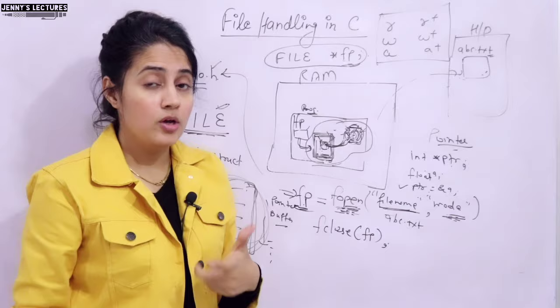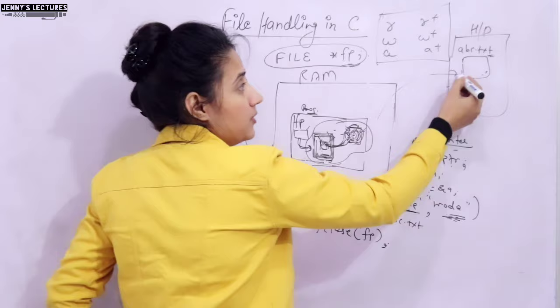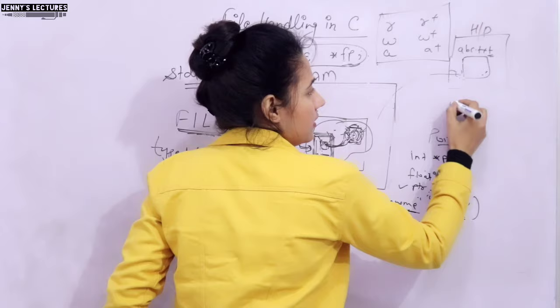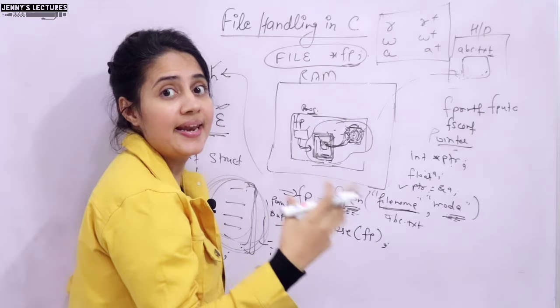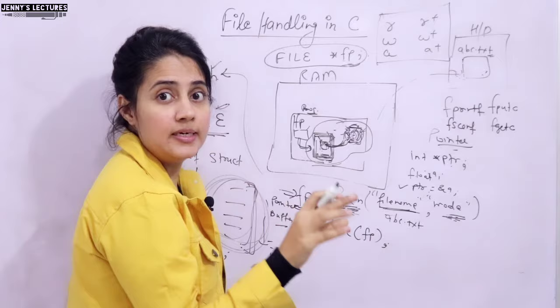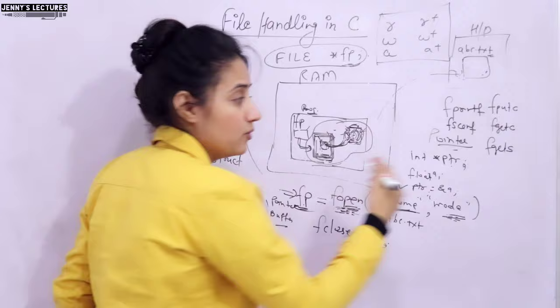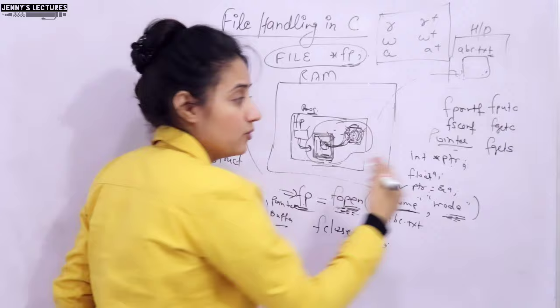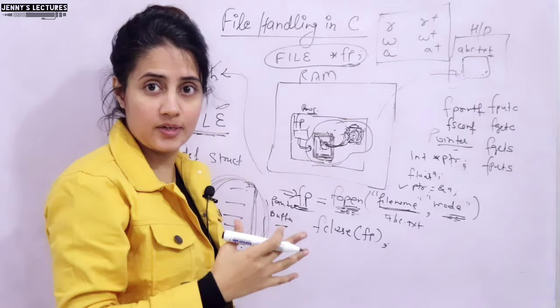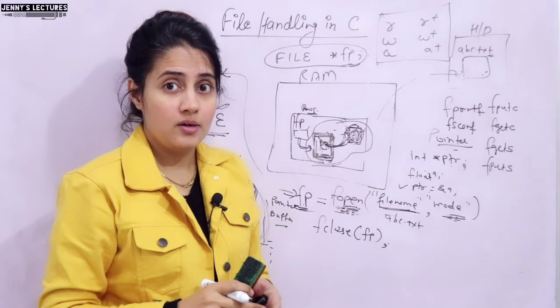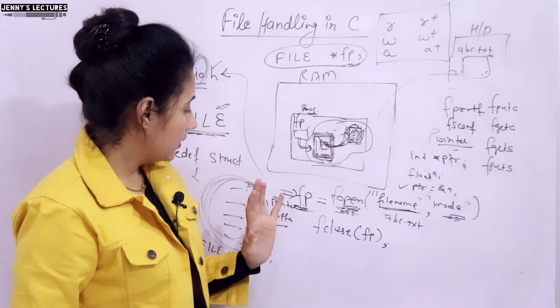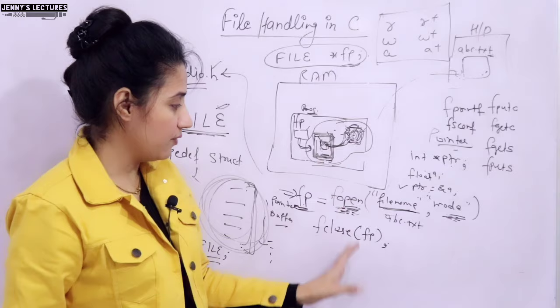So these three things are essential for every file handling program: the FILE pointer fp, the fopen function, and fclose. From the next video, we will cover file operations like fprintf and fscanf for writing/reading, fputc and fgetc for writing/reading a character, and fputs and fgets for writing/reading a string from a file. All modes and functions will be discussed in later videos with proper programs and practical demonstrations.